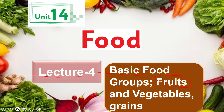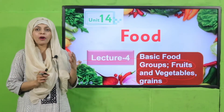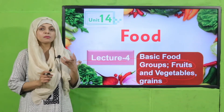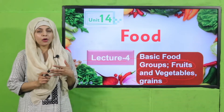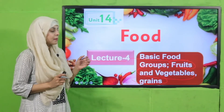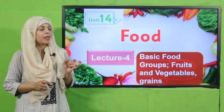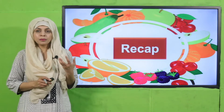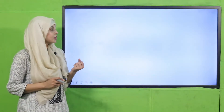Today we will discuss fruits, vegetables, and grains. As you know, in the previous lecture we already discussed the first three primary groups of food which were dry fruits, meat, and dairy products. Let's quickly recap the previous lecture.